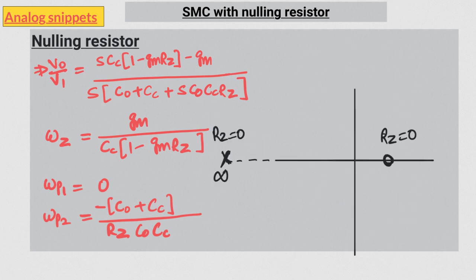Let's consider how this zero and the new pole move as we increase RZ from zero onwards. When the RZ value is zero, we have a right-hand plane zero and there is no second pole. That means the second pole is at minus infinity.